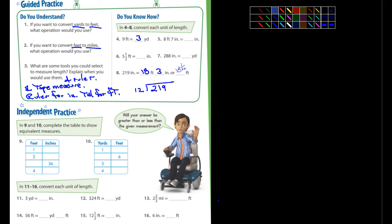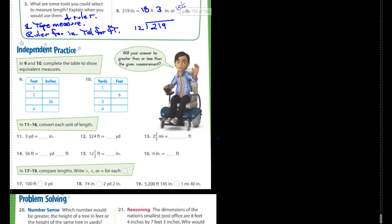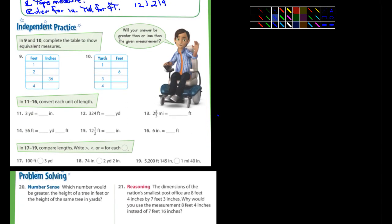Let's go down a little bit lower. Nine and ten. Complete the table to show the equivalent measures. Well, one foot is what? 12 inches. Two feet is 24 inches. I think you could finish nine. Number ten. One yard is what? Three feet. And then how many yards is six feet? Well, that's two. I think you guys can finish those on your own.